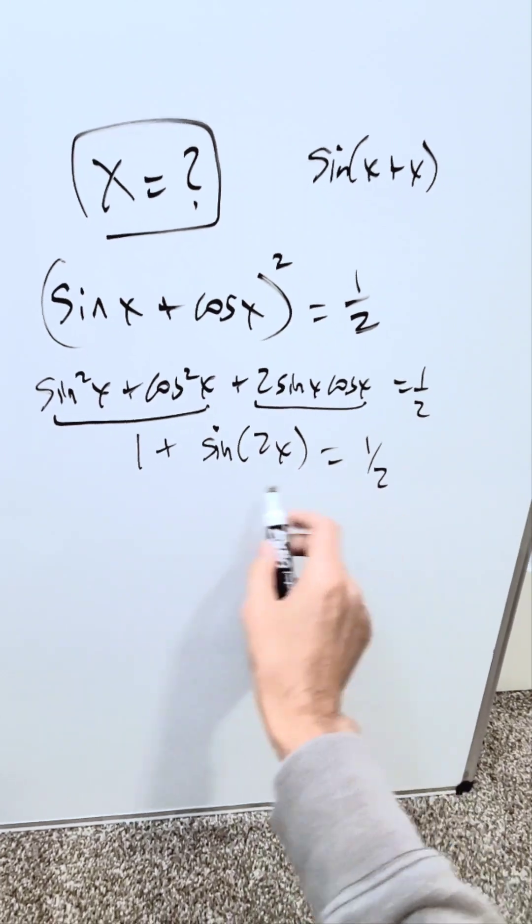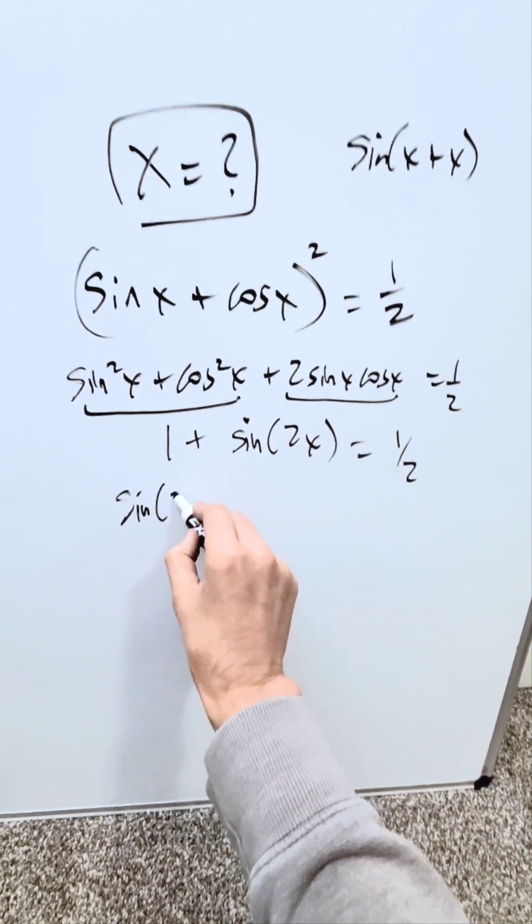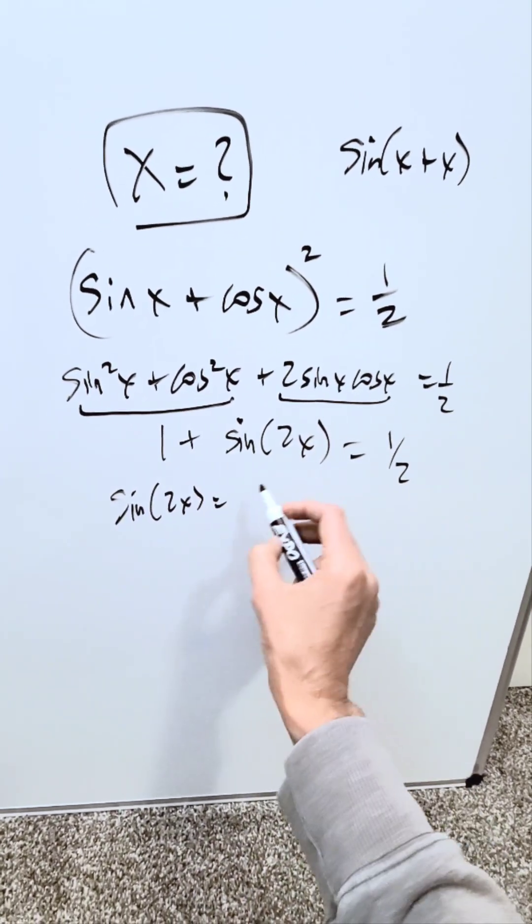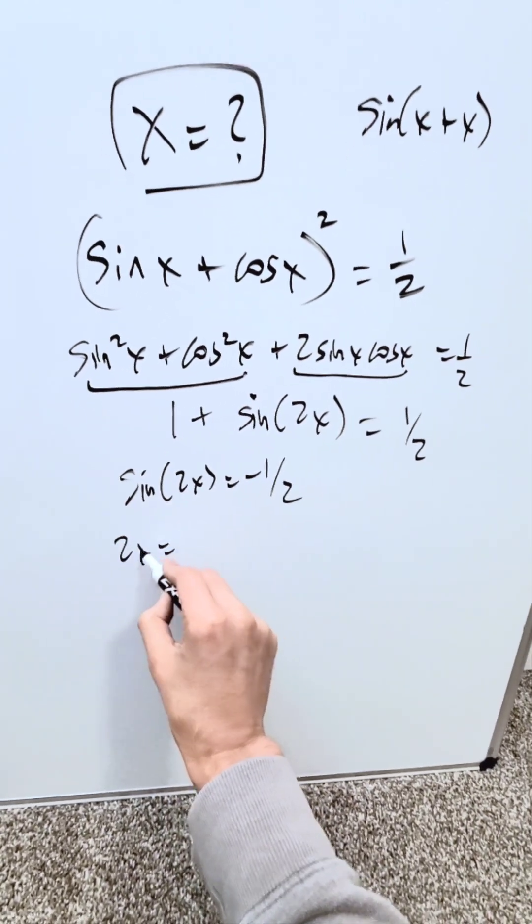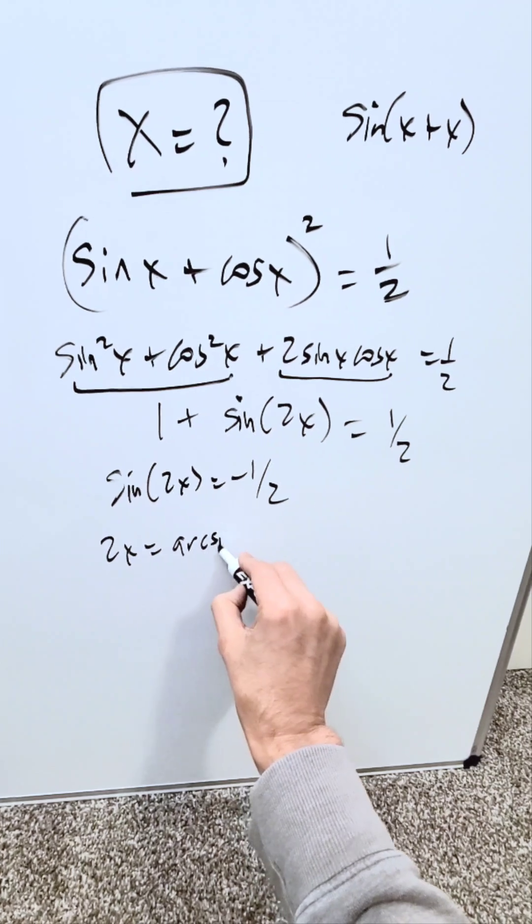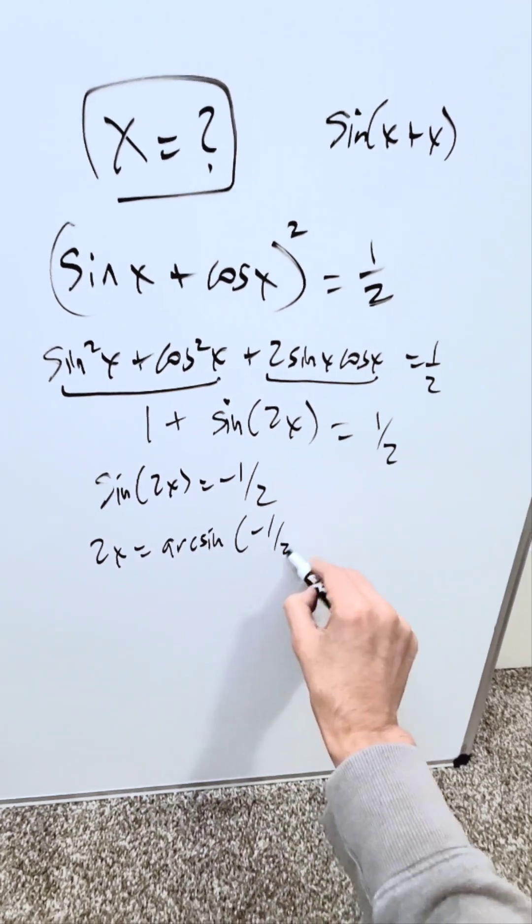You're solving by pushing the 1 on the other side. Sine 2x is equal to 1 over 2 minus 1, which is minus 1 over 2. So 2x is equal to arc sine or inverse sine of minus 1 over 2.